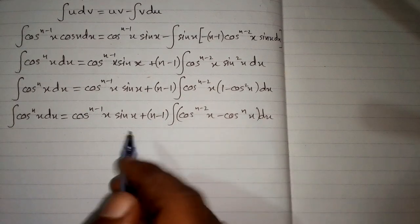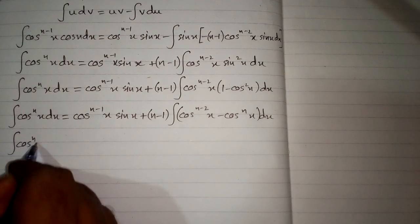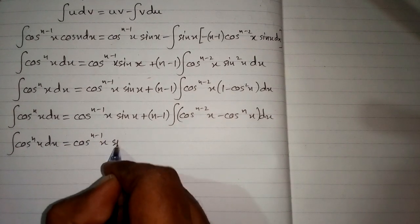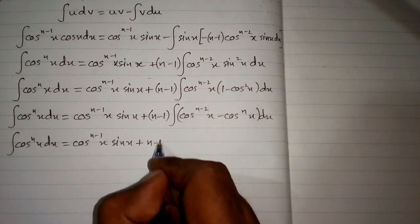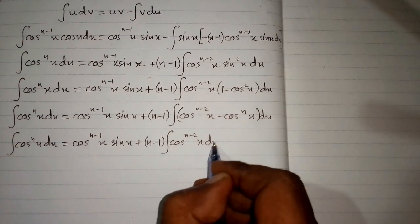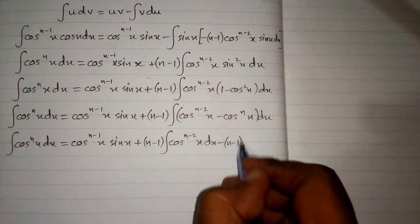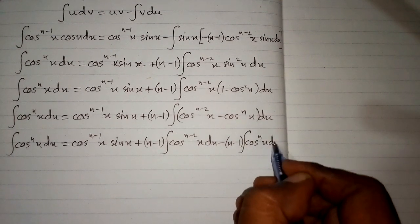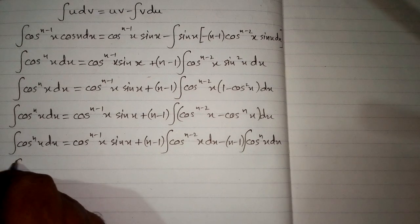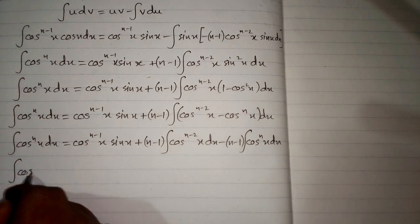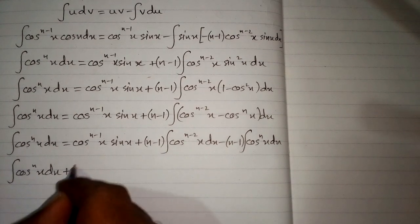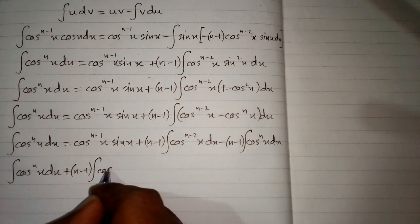Applying the integral on both terms, the integral of cosine raised to the power n equals cosine raised to the power n minus 1 times sine x, plus n minus 1 times the integral of cosine raised to the power n minus 2, then minus n minus 1 times the integral of cosine raised to the power n. Taking this last term to the other side, we have the integral of cosine raised to the power n plus n minus 1 times the integral of cosine raised to the power n.